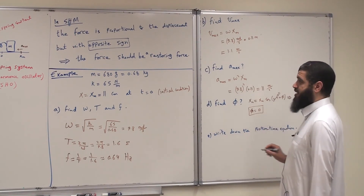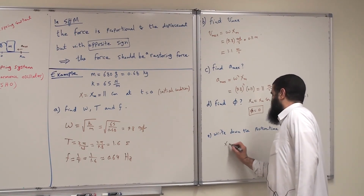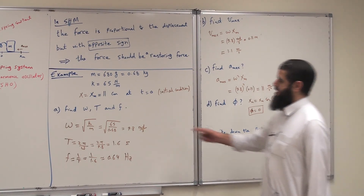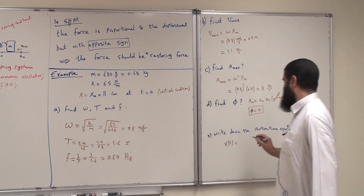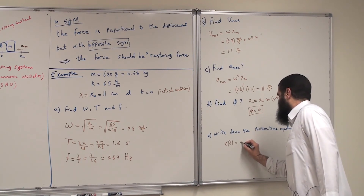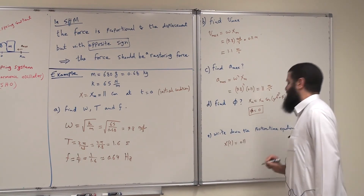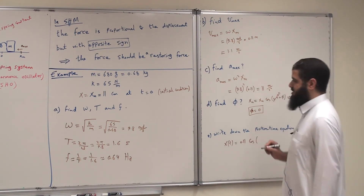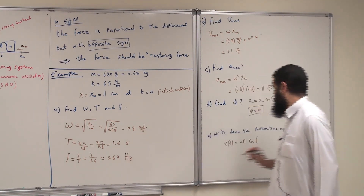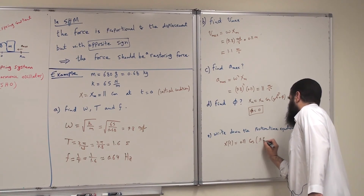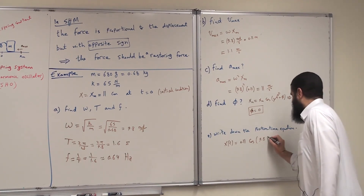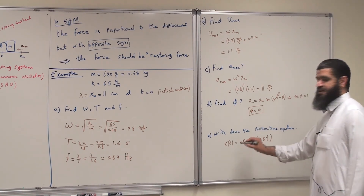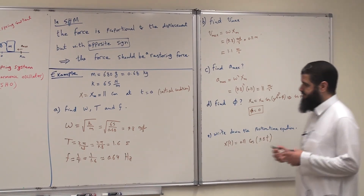Finally, write down the position-time equation. x as a function of t equals xm, which is 0.11 meters, times cosine of omega t plus phi. Omega is 9.8 and phi is zero. So this is the equation of motion: x(t) = 0.11 cosine(9.8t).